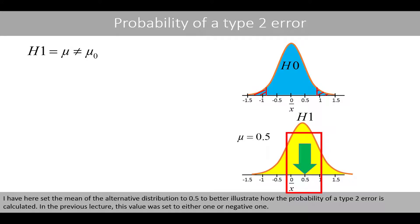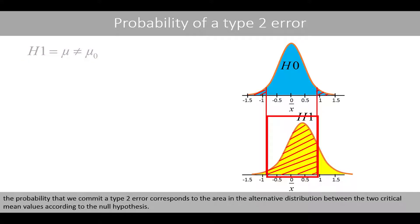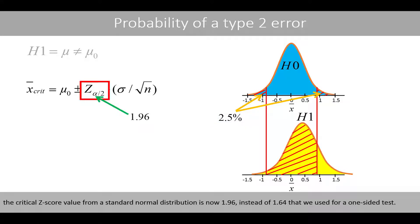I have set the mean of the alternative distribution to 0.5 to better illustrate how the probability of a type 2 error is calculated. In the previous lecture, this value was set to either 1 or negative 1. For a two-sided test, we'll retest if the proposed mean is different from the mean according to the null hypothesis. Since each tail now covers 2.5%, the critical z-score value from a standard normal distribution is now 1.96, instead of 1.64 that would be used for a one-sided test.